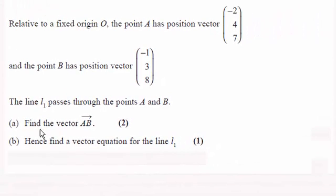Hi there. Now for the first part A here we've just got to find the vector AB where A has this position vector and B has this position vector.